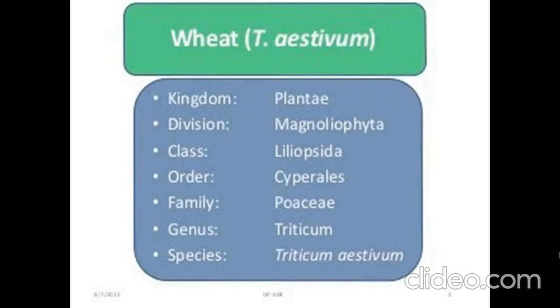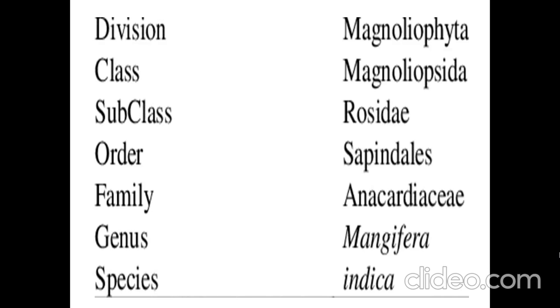Let's study some taxonomic examples. For wheat: kingdom Plantae, division Tracheophyta, class Angiospermae, genus Triticum, species Triticum aestivum. Can you guess what this next species is? Genus is Mangifera, species indica — so it is the mango plant.